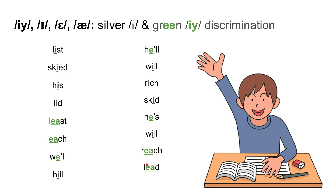Now let's look at these answers: List — silver E. Skied — green E. His — silver E. Lid — silver E. Least — green E. Each — green E. Wheel — green E. Hill — silver E. Heel — green E. Will — silver E. Rich — silver E. Skid — silver E. He's — green E. Will — silver E. Reach — green E. Lead — green E.